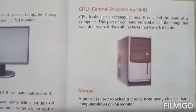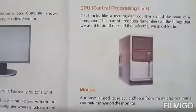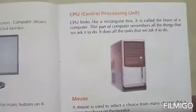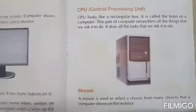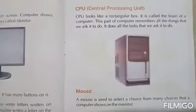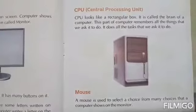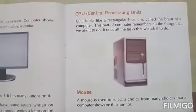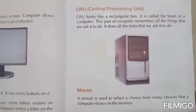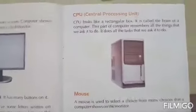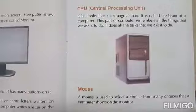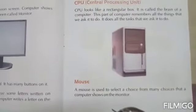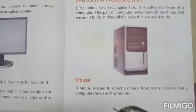CPU is another part of the computer. What is the full form of CPU? Central Processing Unit. The full form of CPU is Central Processing Unit. CPU looks like a rectangular box. CPU is called the brain of a computer.